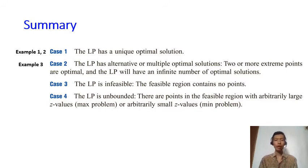In example three, we have an LP that has alternative or multiple optimal solutions. In example four, we have an LP that is infeasible because it does not have any feasible region. And finally, we saw an example where the LP is unbounded.